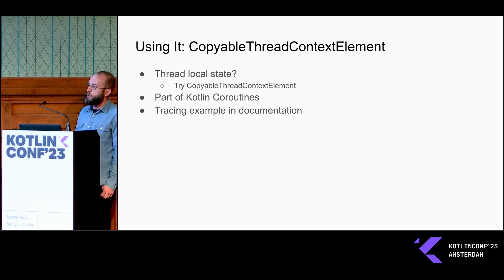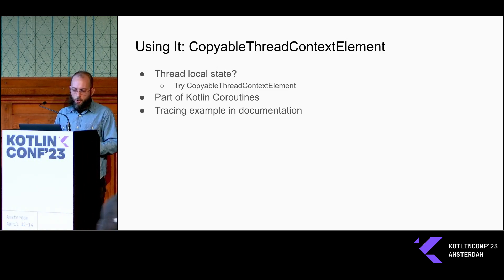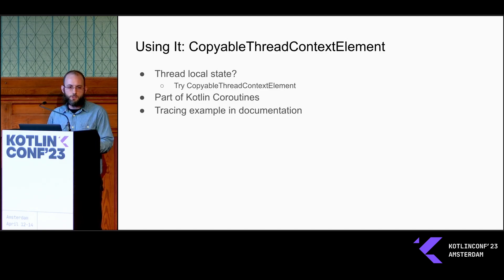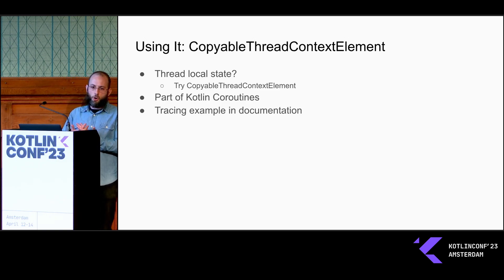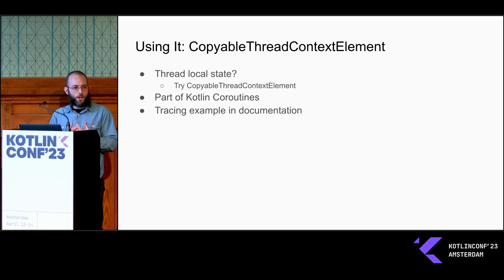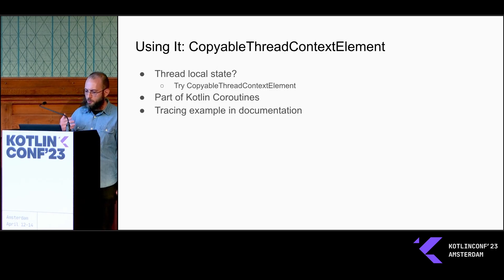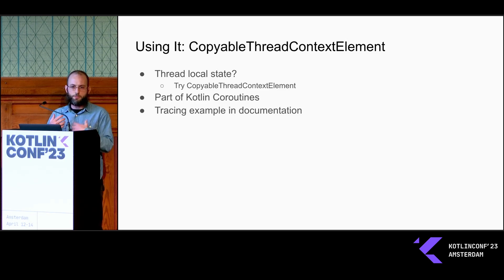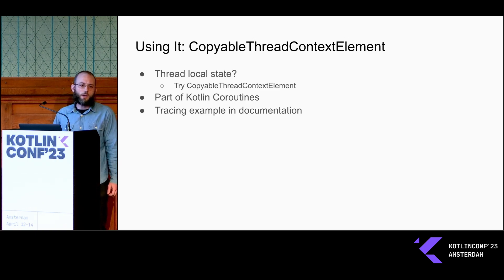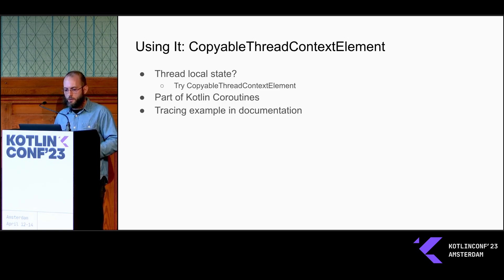If you have a problem with tracing — or any other similar problem with thread local state — this doesn't just apply to tracing, it also applies to Java RPC systems. If you have this problem of thread locals, global context, or state corruption as your coroutine suspends and resumes on a particular thread, give CopyableThreadContextElement a look. This machinery is good for solving these kinds of grungy thread-coroutine interactions. It's part of Kotlin coroutines and we give an example of a tracing CopyableThreadContextElement in the class KDoc, so give it a look if this sounds like something that might help you.